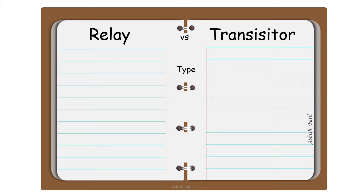First point: Type. Relay is an electromechanical device. Transistor is semiconductor device.